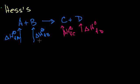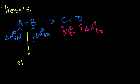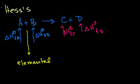Hess's Law tells us that the change in enthalpy is independent of what we're doing. So instead of going directly from reactants to products, we could take A and B back to their constituent elemental forms. If this were carbon dioxide, you'd go back to carbon and oxygen molecules. And how much energy does it take to go back to the elemental form? The heat of formation is what you get going from elemental form to A or B, so going back is the minus of those.